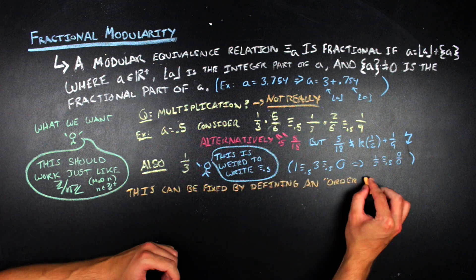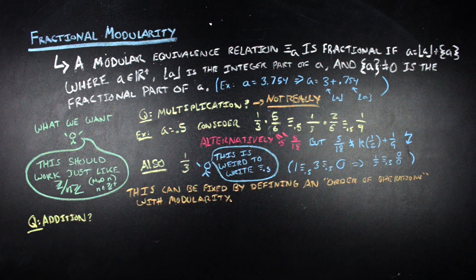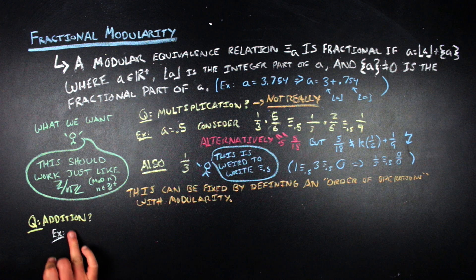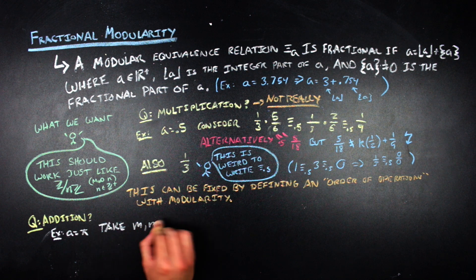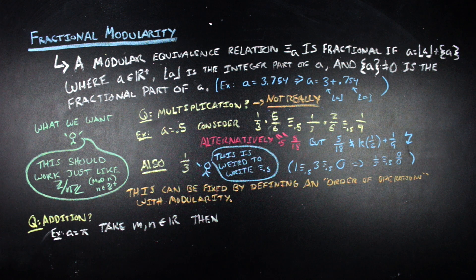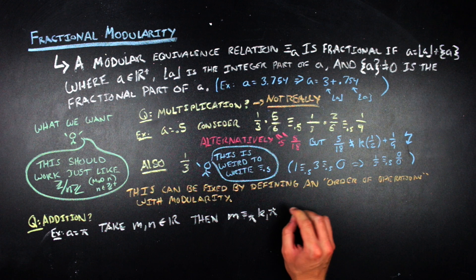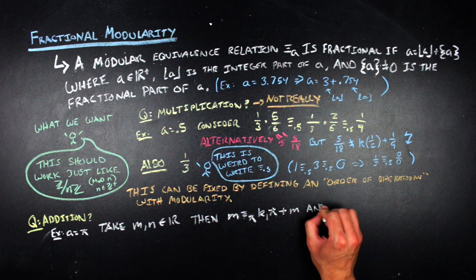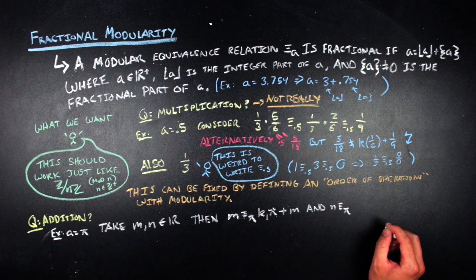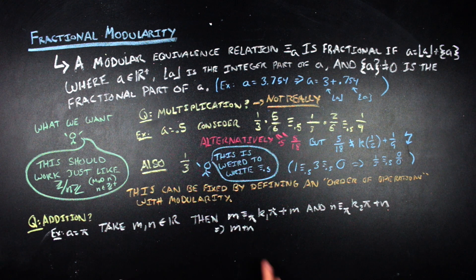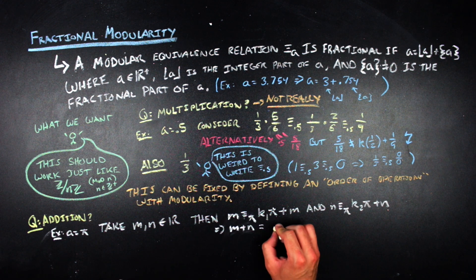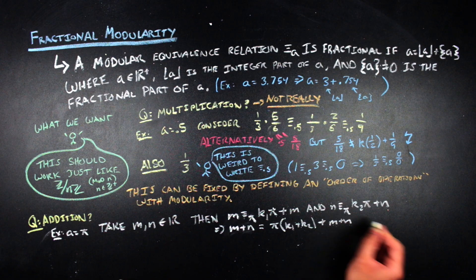If we move on to addition, addition's a lot nicer. So here, we can take, let's say, pi to make it the most eccentric thing that you could possibly choose. And if you take two numbers, m and n, somewhere in the real numbers, you can write those as equivalent mod pi to some integer multiple of pi plus themselves. And then you can just add things together. And you end up with an integer multiple of pi plus m plus n, and you're good. It works. It's great. Amazing.